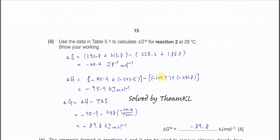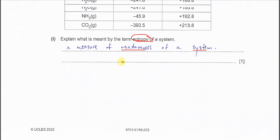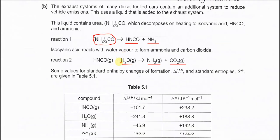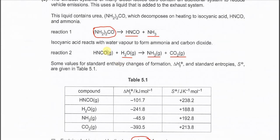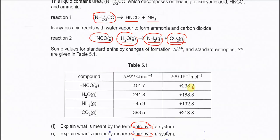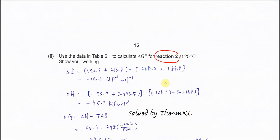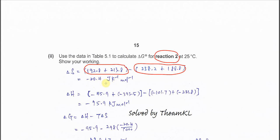Part 2: Use the data in Table 5.1 to calculate the Gibbs energy for reaction 2. We need to identify the reactants and products involved and use all the ΔHf and entropy values. We start with the calculation of entropy: entropy of products minus entropy of reactants. You get −20.4 J K⁻¹ mol⁻¹. Remember, entropy units are in joules, not kilojoules — J K⁻¹ mol⁻¹.